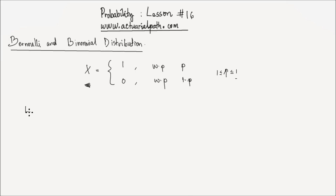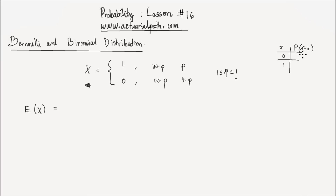Let's find the expected value of this Bernoulli random variable x, the variance, and the moment generating function. This random variable x is a discrete random variable, because x takes a value of 0 or 1. The probability that x takes a value of 0 is 1 minus p, and the probability that x takes a value of 1 is p. Since this is a discrete random variable, its expectation is simply the sum, for x from 0 to 1, of x times p of x.